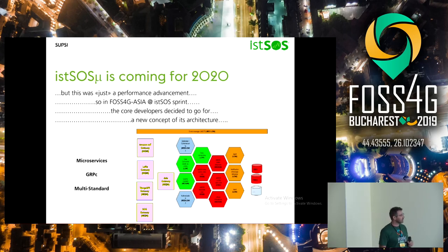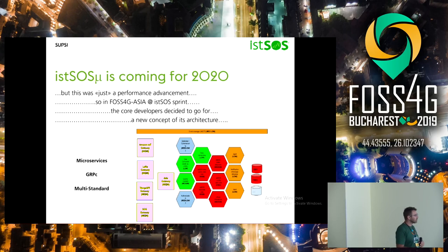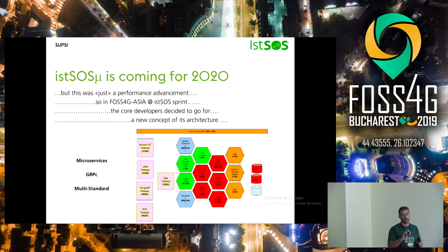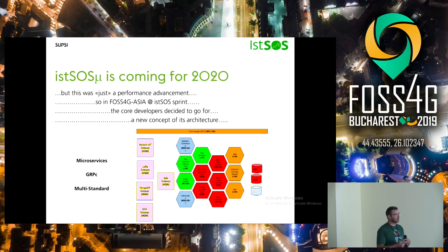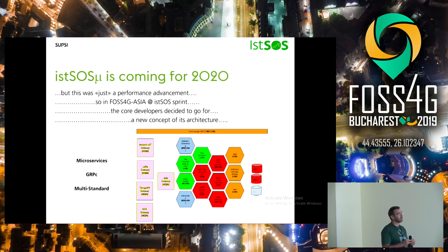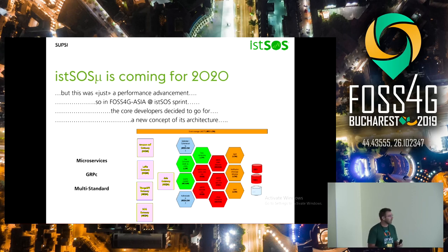We decided to distinguish the different objects in the sensor observation model and create small microservices for each one — a service for observations, one for location, one for observed properties, and so on. There are two future usage scenarios with IoT: either sensors with very high frequency producing many observations, or fewer observations but from many more sensors. These have different database impacts, and separating services allows us to scale only the parts that actually need scaling.